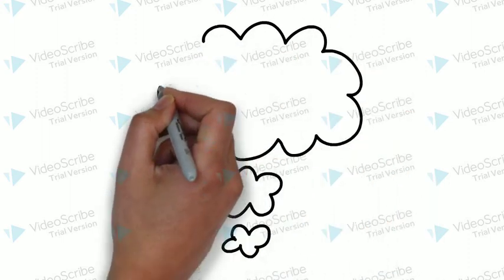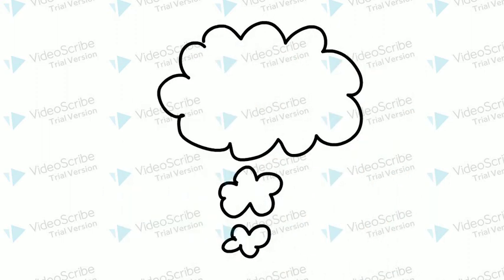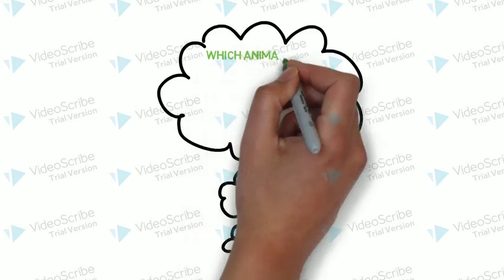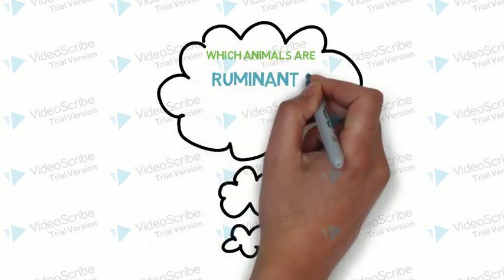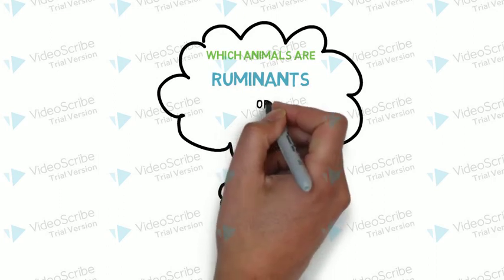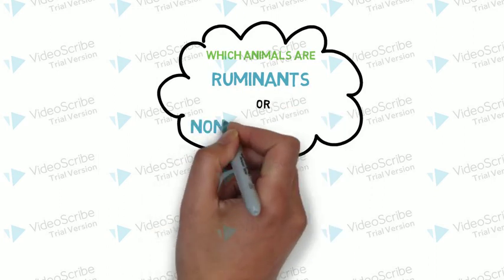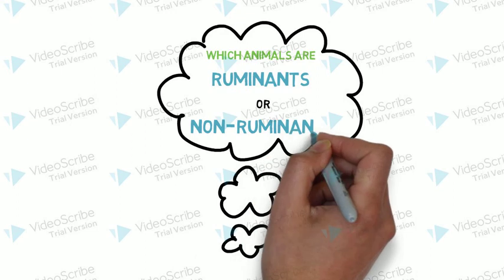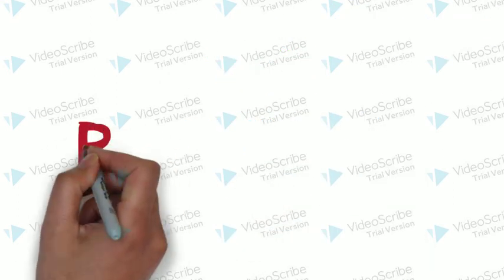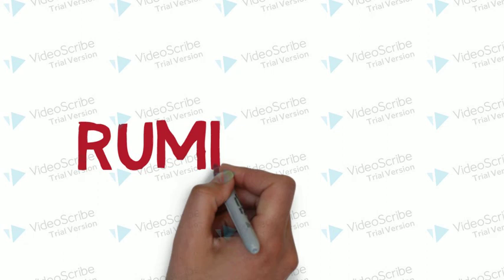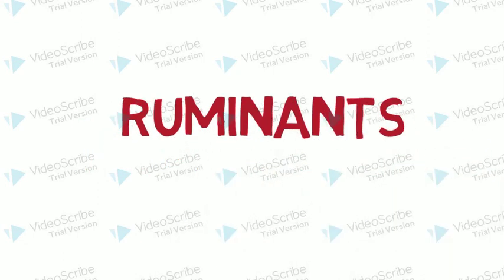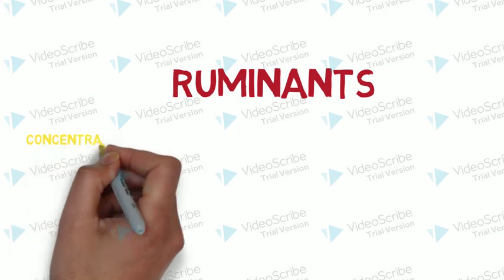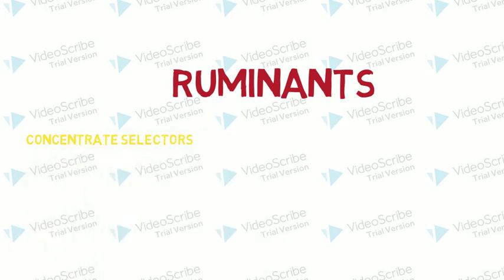At this point we are all probably wondering the same question: how do we tell which animals are ruminants and which animals are non-ruminants? Ruminants are any animal that has a four-compartment stomach. They can also digest cellulose. These are classified into three categories.